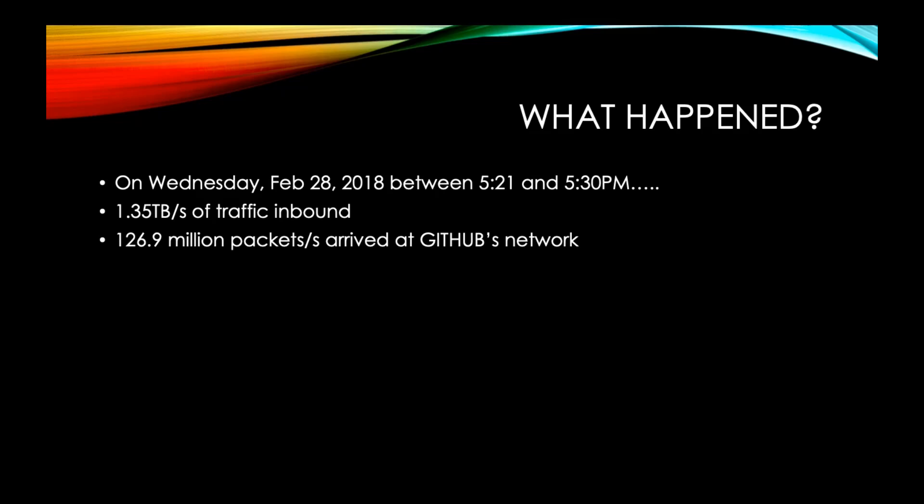Between 5:21 and 5:30 coordinated universal time, malicious traffic originated from over a thousand different autonomous systems across tens of thousands of unique endpoints. The peak inbound traffic was 1.35 terabytes per second via 126.9 million packets per second.